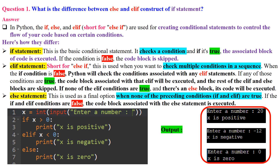The elif statement (short for else-if) is used when you want to check multiple conditions in a sequence. When the if condition is false, Python checks the conditions associated with any elif statements. If any of those conditions are true, that elif block is executed and the rest are skipped. If none of the elif conditions are true and there's an else block, the else block's code is executed — it is the final fallback option.